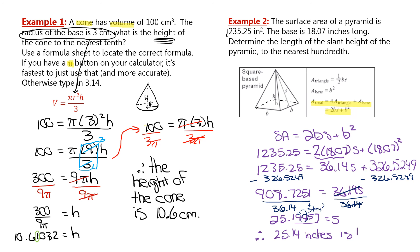Therefore, 25.14 inches is the slant height. So there you go — some practice questions still isolating variables, which we've been doing for a while, but today we're substituting lots of numbers with decimals and that's how you do questions with rounding.